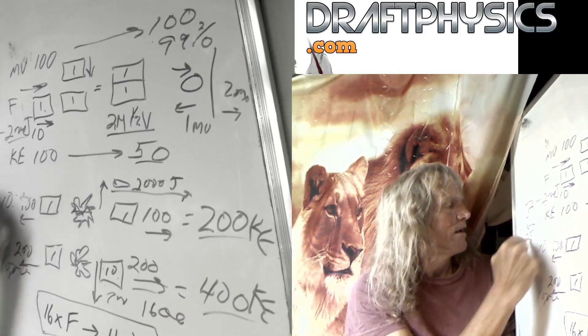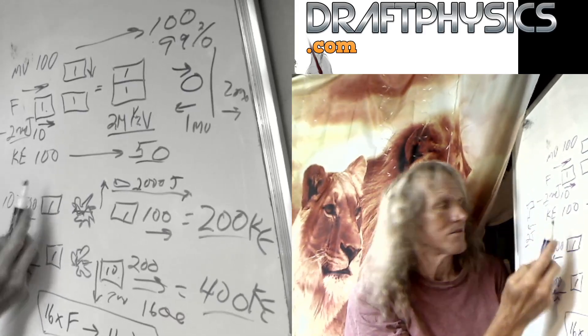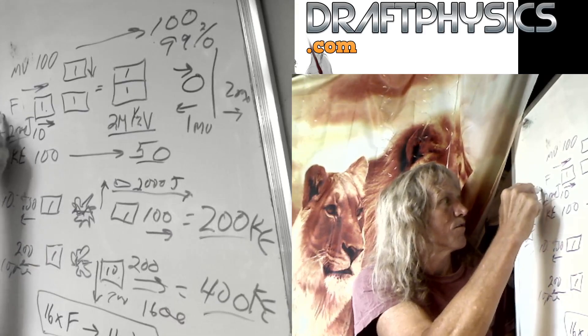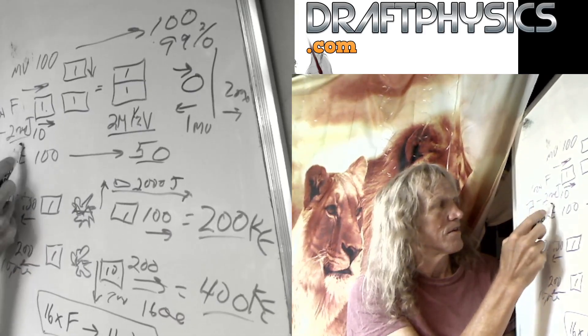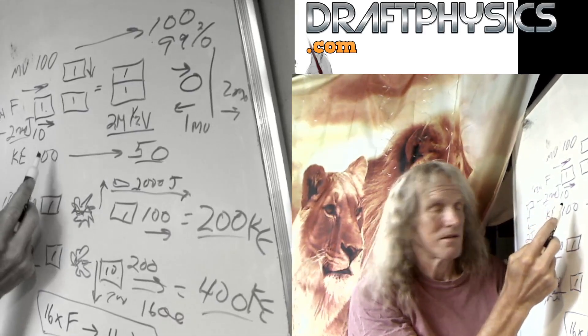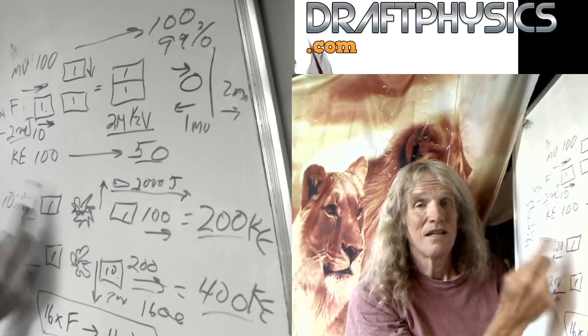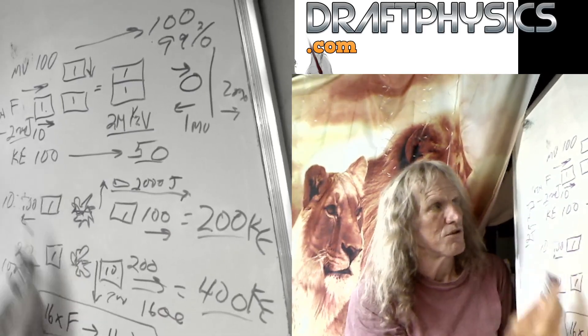The gun leaves with 2 joules of energy. The bullet leaves with 2,000 joules of energy by their kinetic energy theory. By momentum theory, they have exactly the same energy. It's just 1,000 atoms over here moving 1 mile an hour versus 1 atom moving 1,000 miles an hour. It's the same amount of energy, same amount of motion in the universe.